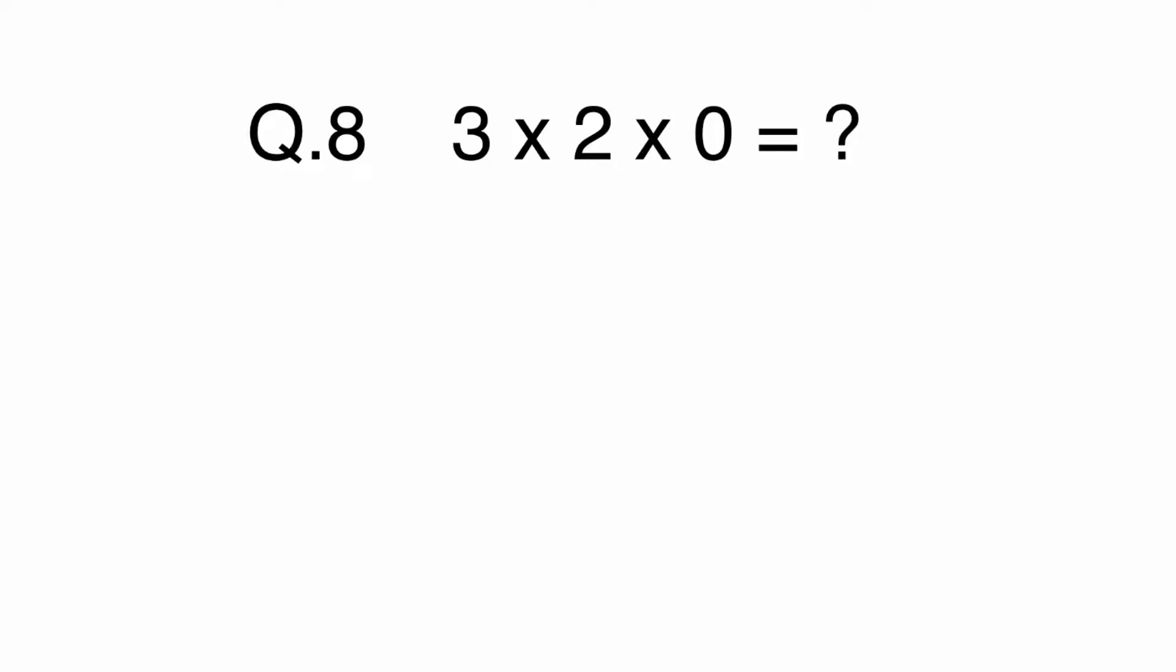Any number multiplied by zero gives a product of zero. Three times two equals six, but six times zero is zero. The answer is A. Zero.